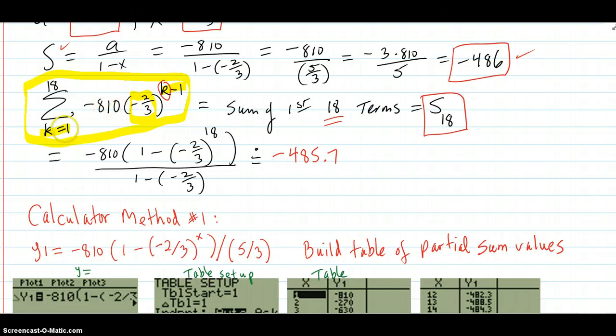When k increments to 2 on its way to 18, up here in the exponent you'll have a 2 minus 1, which is a 1. And you'll hit the negative 810 with 1 power of negative 2 thirds. And that's how you get to your second term. And the summation says to add all those up from term 1 to 18, and so that's what we're going to get with our sum of our first 18 terms.